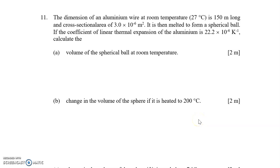Number 11, the SPM. The dimension of aluminum wire at room temperature 27°C is 150m long and cross-sectional area 3×10^-6 m². Given that the coefficient of linear thermal expansion of the aluminum is 22.2×10^-6 per Kelvin, calculate the volume of the spherical ball.